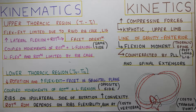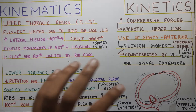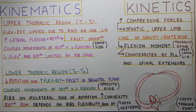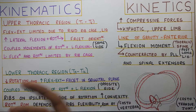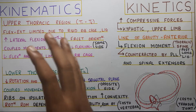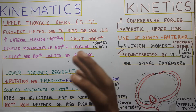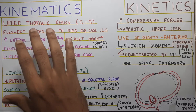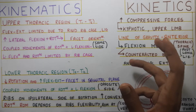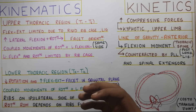In this video we are going to talk about the kinematics and kinetics of the thoracic spine. Last video we covered the articulation and the structure of the thoracic spine, where we saw the facet orientation and how the movements were occurring. We will further delve into the movements and also the forces acting on the thoracic spine. The upper thoracic region is from T1 to T6, whereas lower falls from T9 to T12.